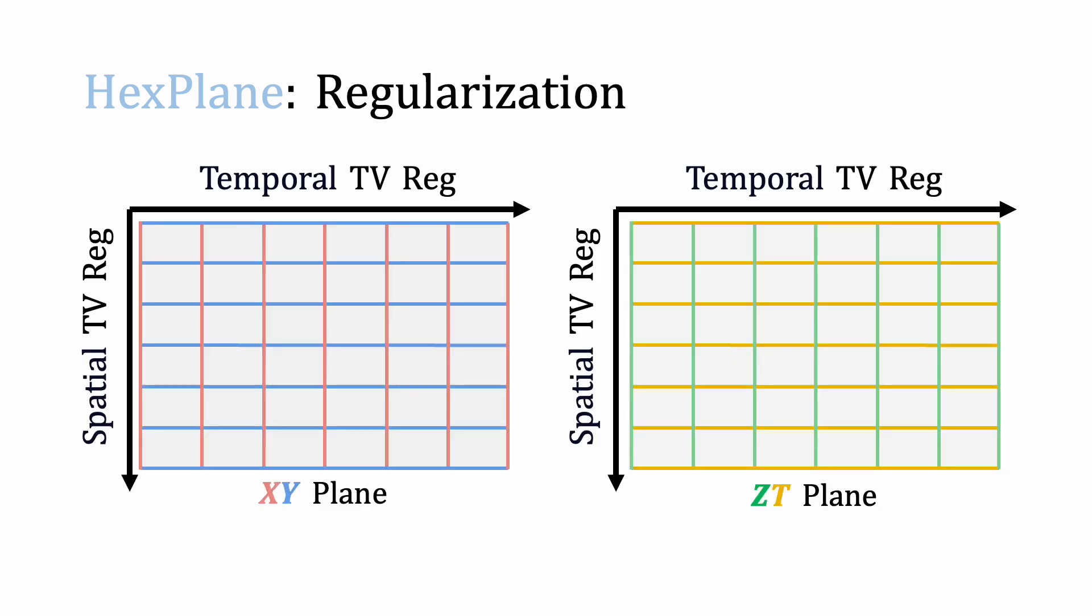To regularize HexPlane, we apply total variation loss separately on spatial and temporal axes, encouraging continuity in both space and time domain. Also, we progressively enlarge the resolution of feature planes during training.